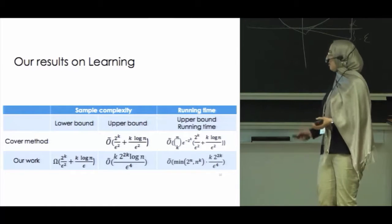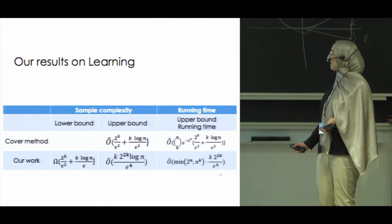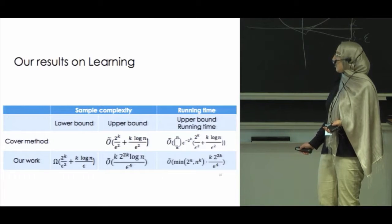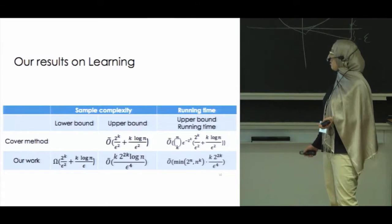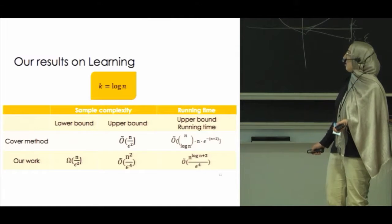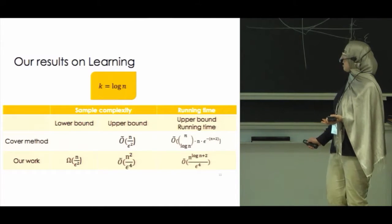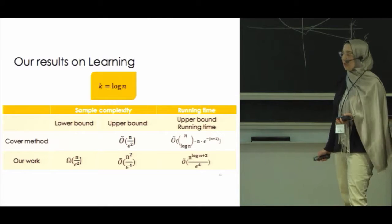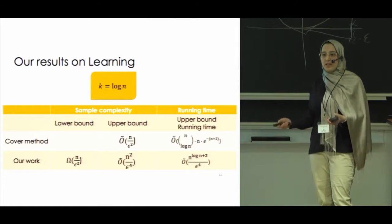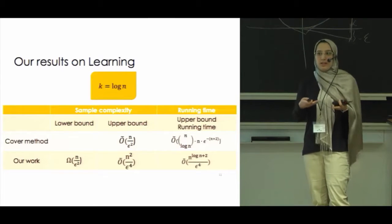You can almost achieve this bound using the cover method, but the problem with the cover method is that it is doubly exponential in terms of k. We have another algorithm whose sample complexity dependence is 2 to the 2k instead of 2 to the k, but the running time is much better. For the interesting regime where k is log n or somewhat bigger, we have larger sample complexity but our dependence on n is no longer exponential. Note that the size of the domain here is 2 to the n, so all of these sample complexities are still sublinear in the size of the domain, but exponential in the dimension.